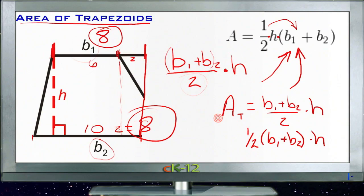So really, not that difficult. Just find the average of your two bases, and multiply that number by your height, and you're good to go. Let's take a look at the examples.